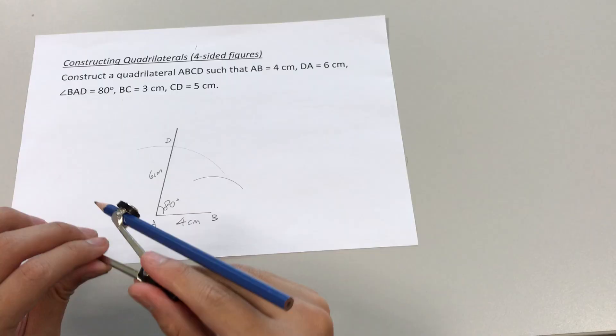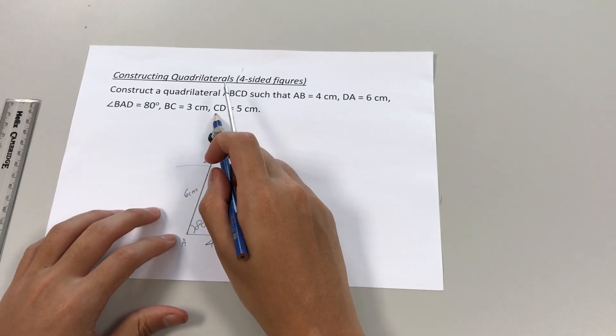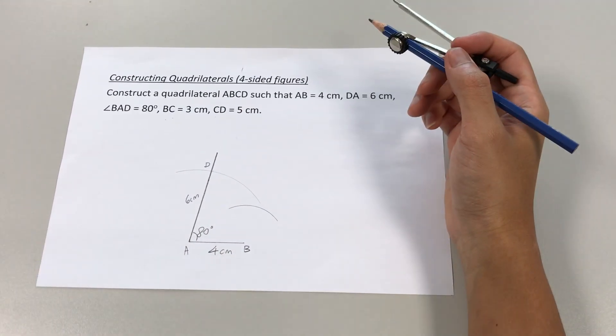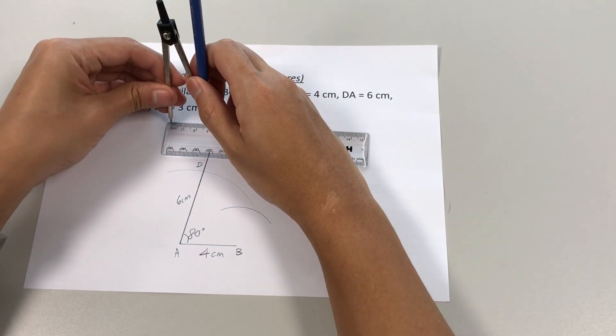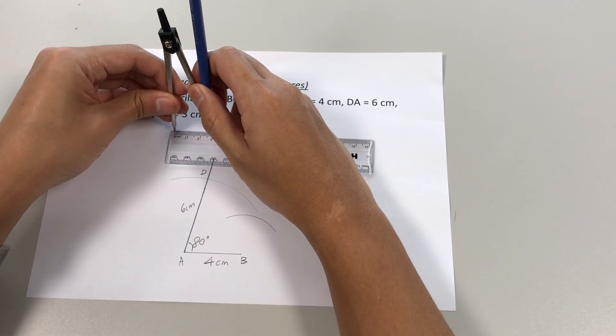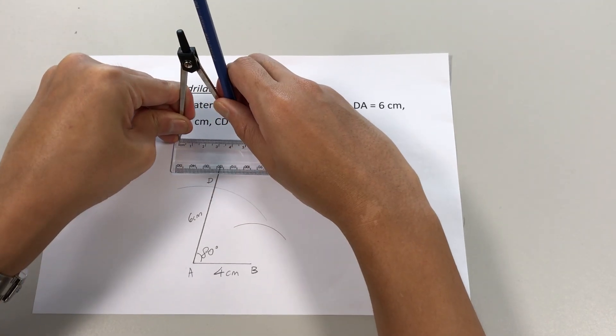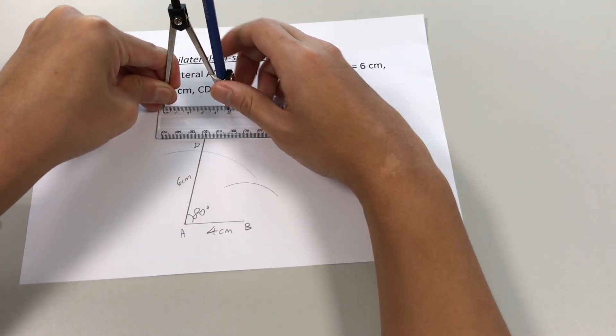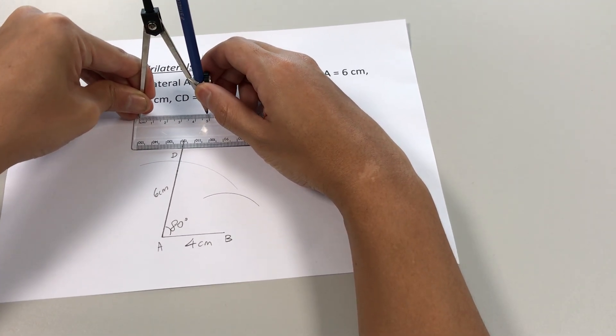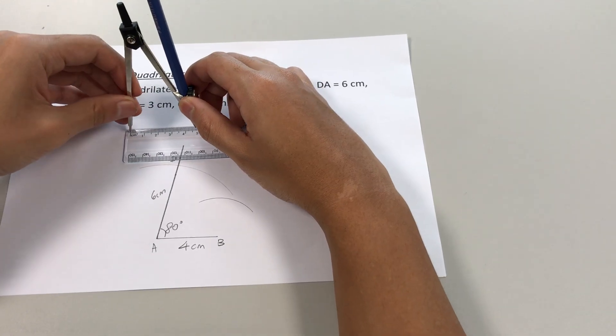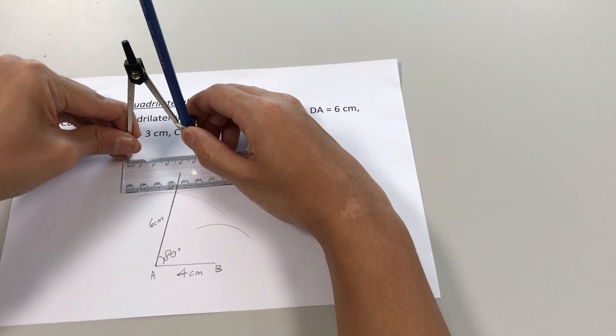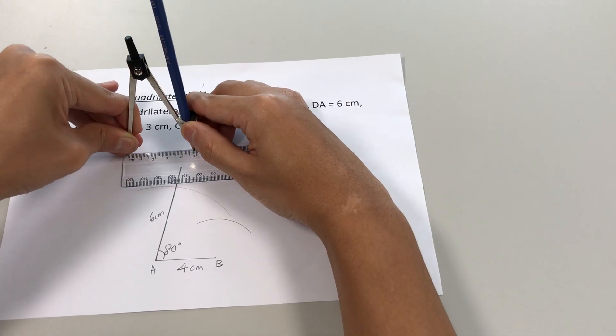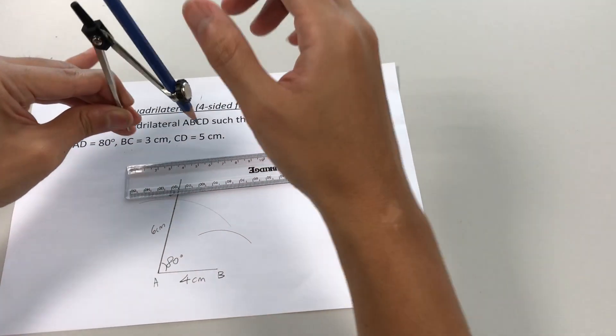Okay, and we move on to the next piece of information. CD equals to five centimeters. We'll take our ruler again. Measure out five centimeters. Okay. All right, five centimeters. And now...